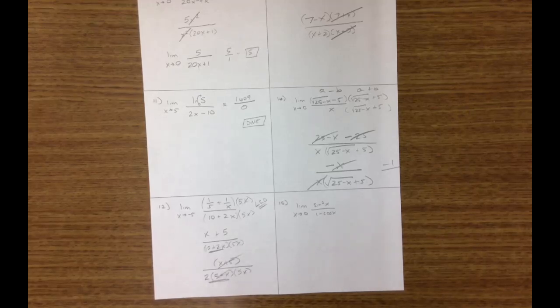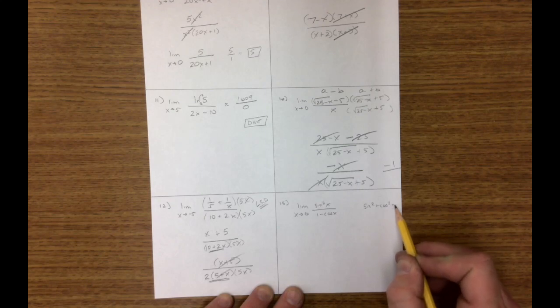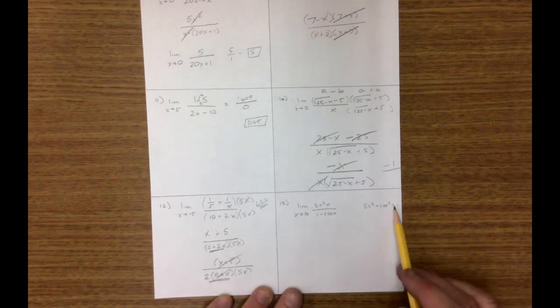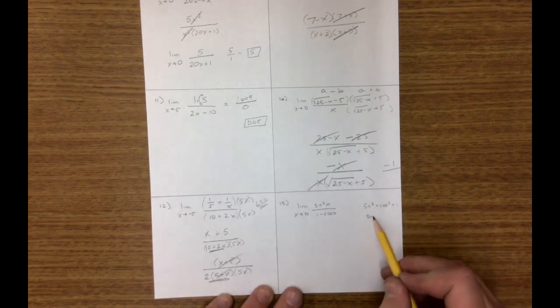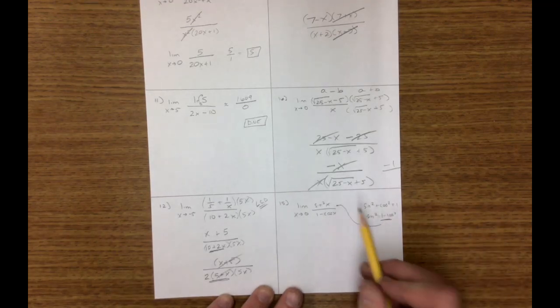And the last one, I'm just going to take some trig identities here. Sine squared can be switched into cosine. Because if we remember this identity, sine squared, cosine squared is 1. Sine squared is 1 minus cosine squared. So this can go in the numerator.